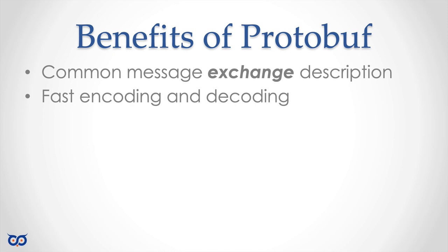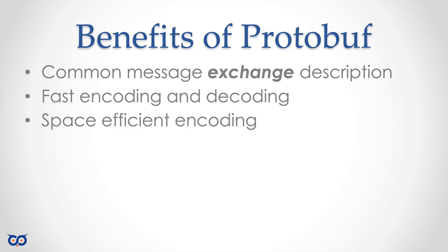This is especially important on mobile devices like cell phones, where the more the CPU runs the more energy it uses. Protocol buffers are also space efficient — when we encode something with JSON or XML, every time we send a message we send the field name with it. Protocol buffers instead send a number to represent the field name, which saves a lot of space.